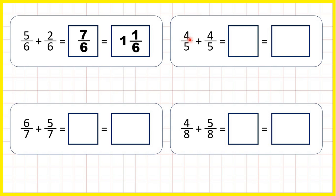Now we have 4 fifths plus 4 fifths. We're adding fractions with the same denominator, so the denominator stays the same in our answer, and 4 plus 4 is 8, so as an improper fraction, we have 8 fifths.